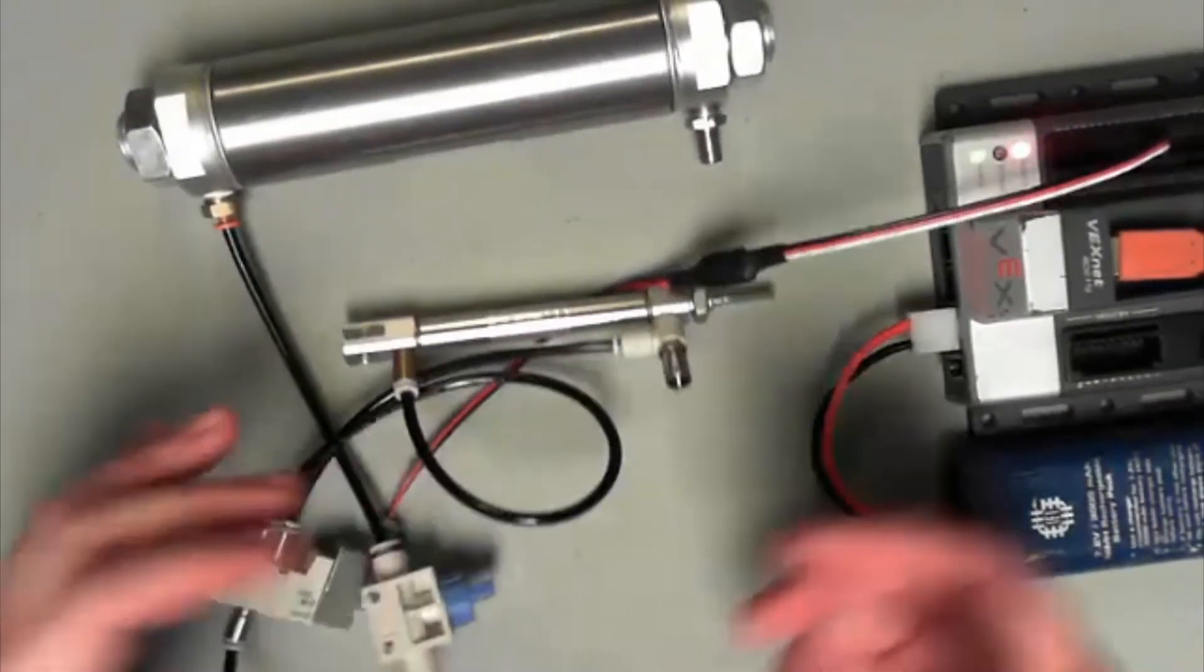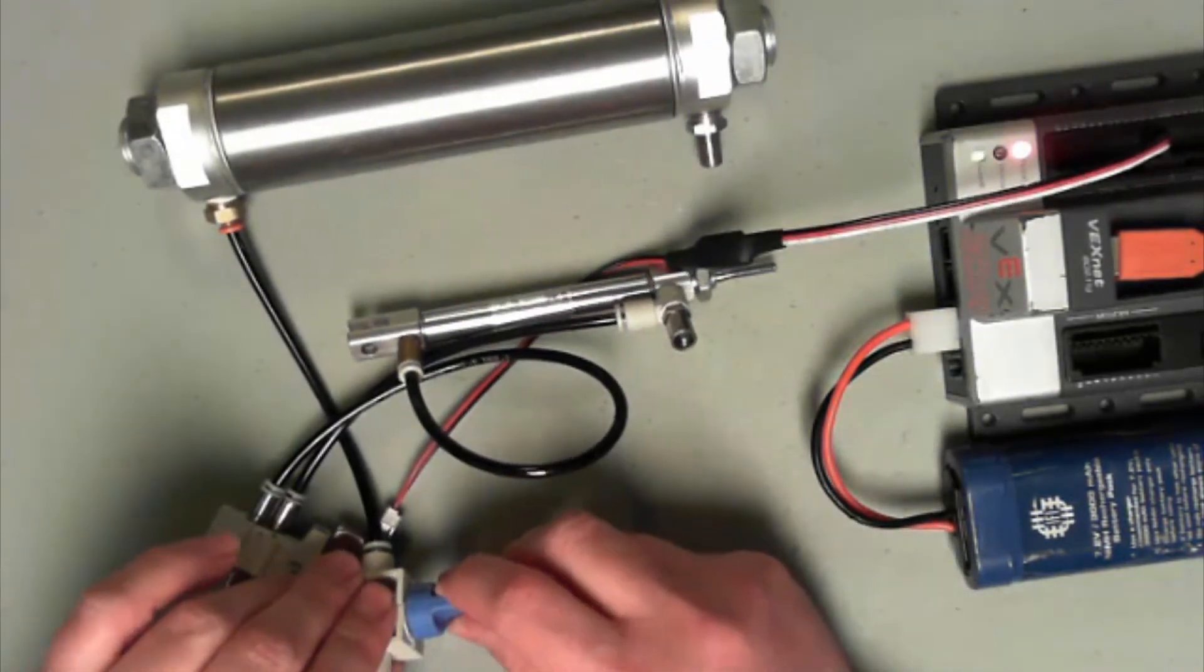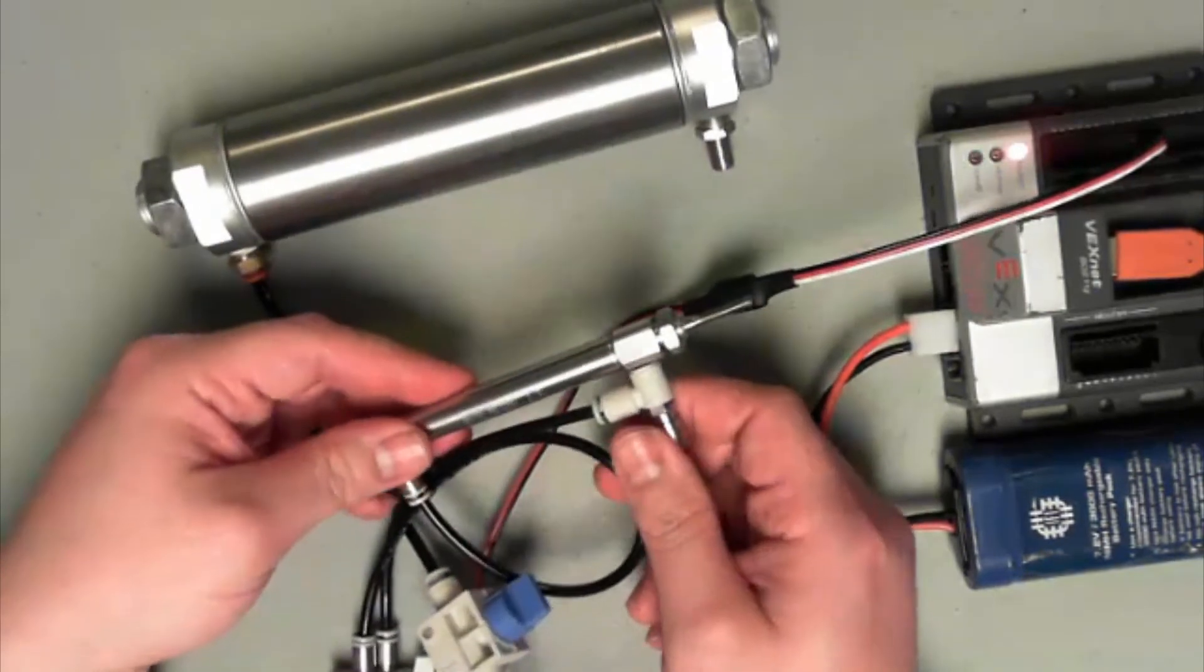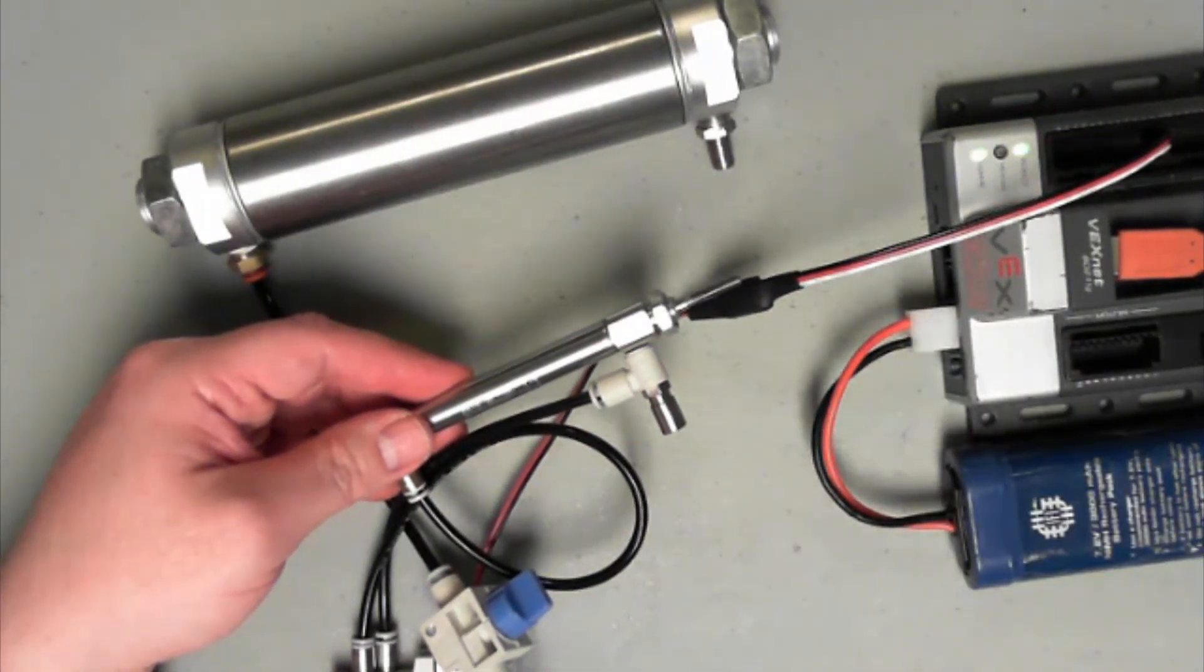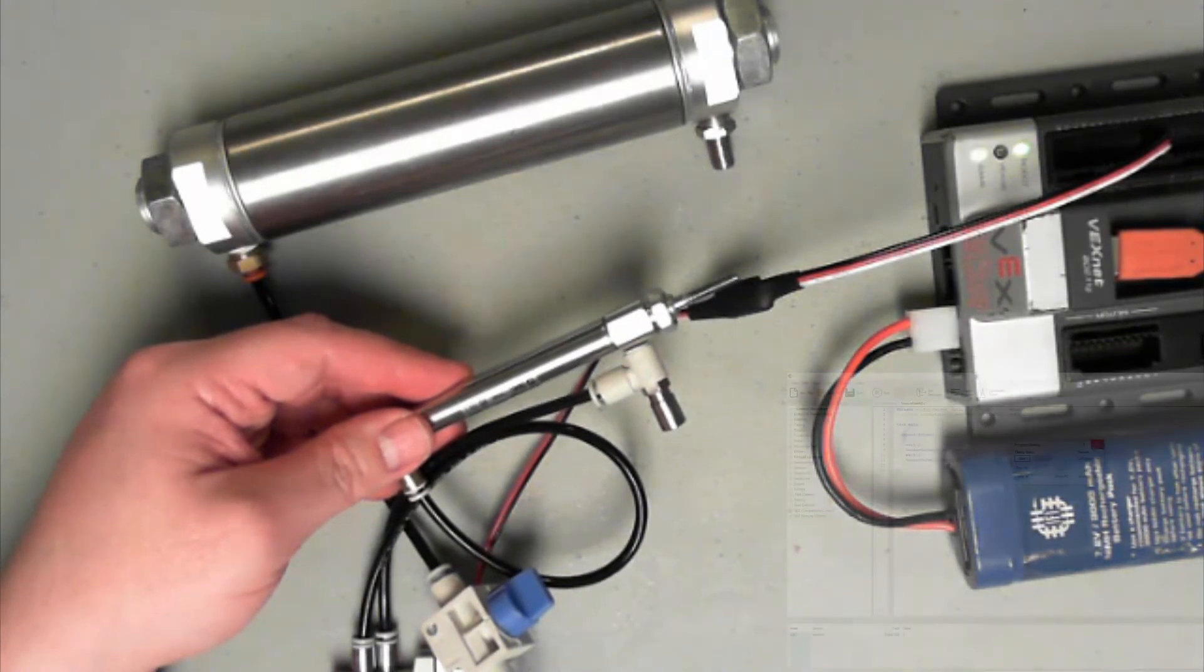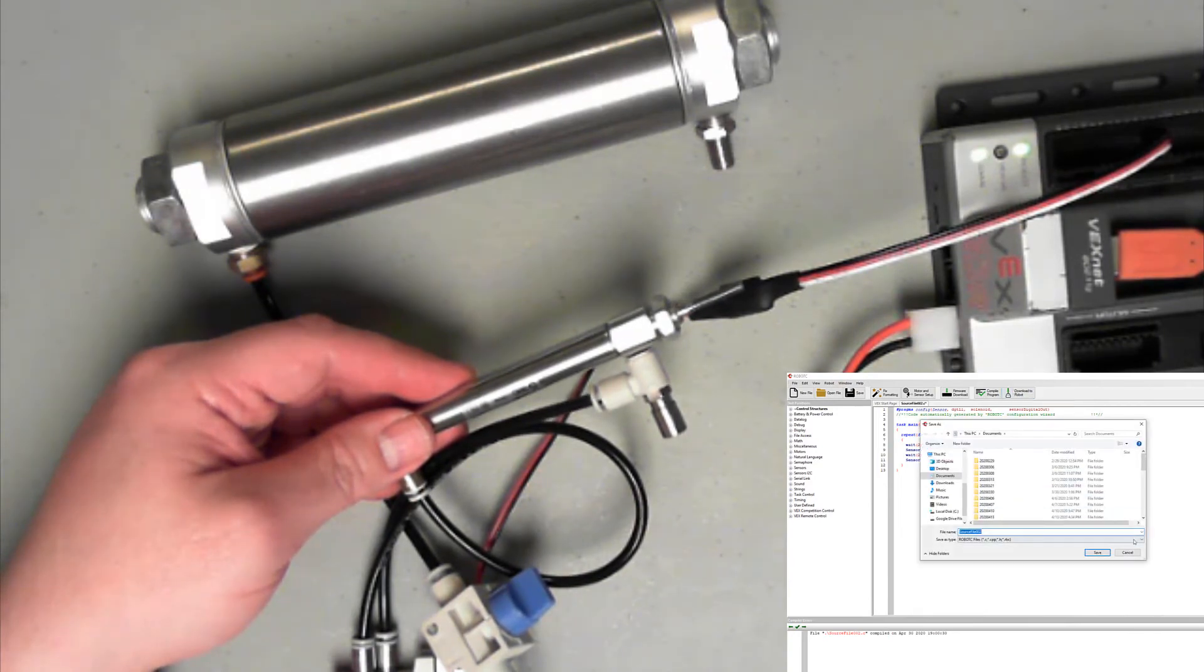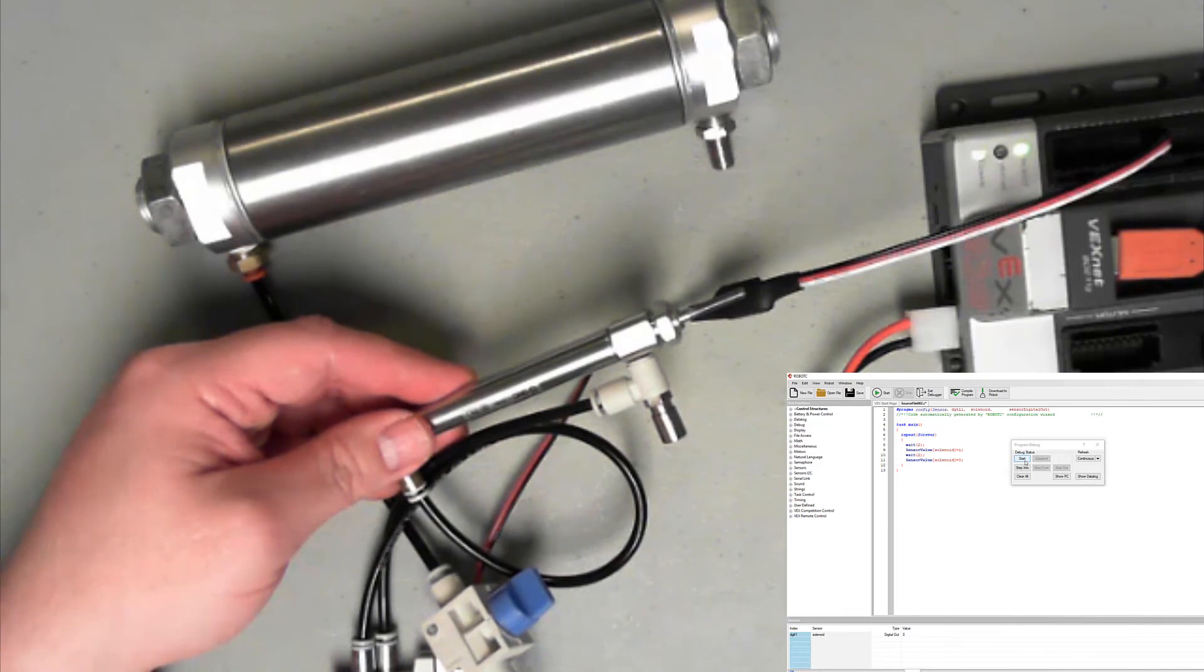So this should be it. And I should be able to just reutilize the program that I already wrote. So I'll go ahead and open up the valve. I'll go ahead and hold on to it. And I'm going to turn on the power to the cortex. Go back over to Robot C. I'm going to use the exact program that I've already written. I will download to the robot. And I'll start my cycle.